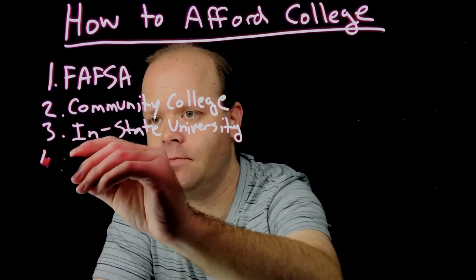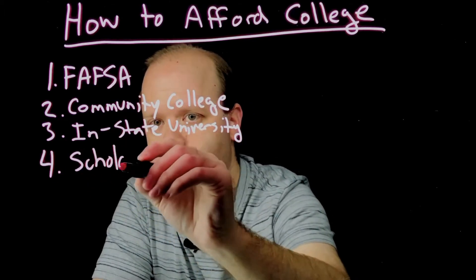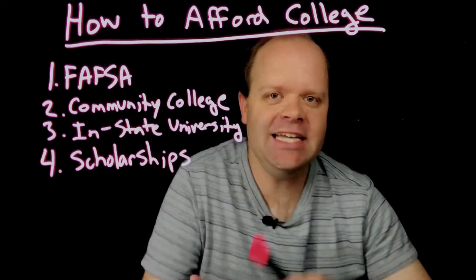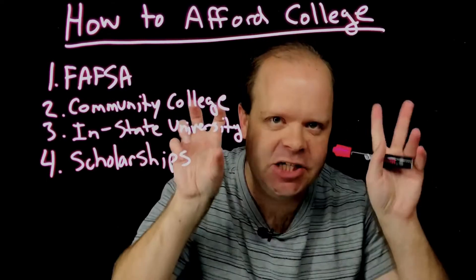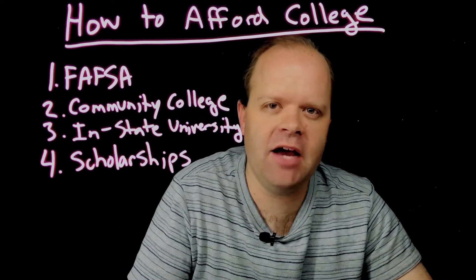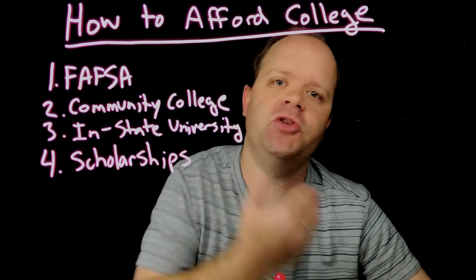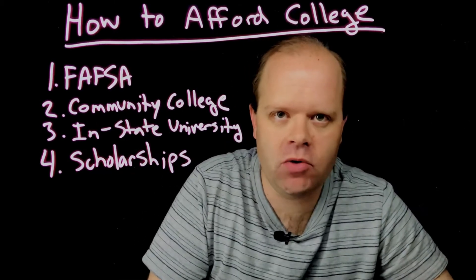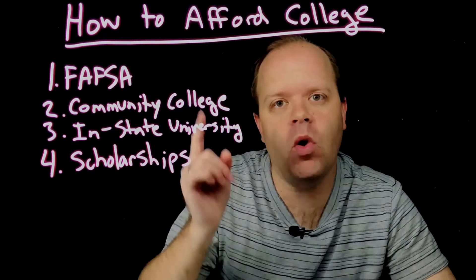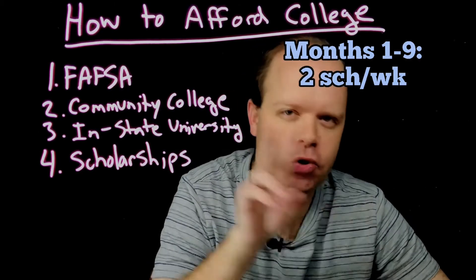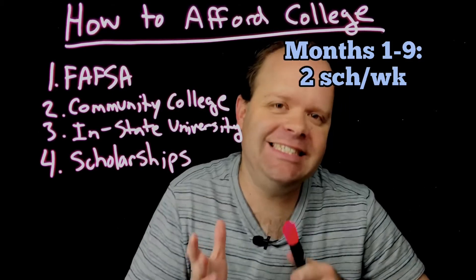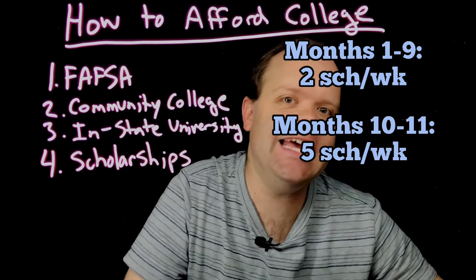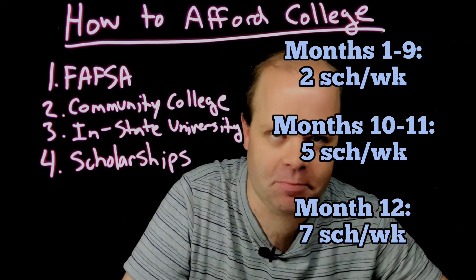Four: you need to be applying to as many scholarships as you can. During the last year before you go into college — months one through nine — try applying for at least two scholarships per week. Then in months 10 and 11, start applying to five scholarships per week. And finally, in the last month, kick it up to seven scholarships per week.